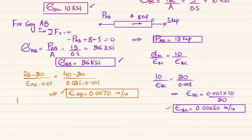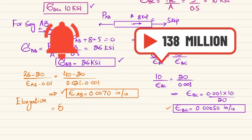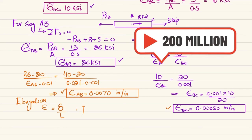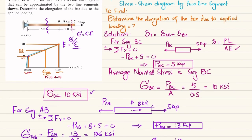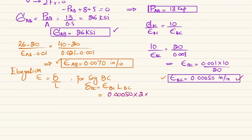Now we move to elongation calculations. Since strain equals change in length divided by original length, the change in length of BC equals strain in BC times length of BC. Strain in BC is 0.0050, and length of BC is 2 feet, which is 24 inches. So the change in length of BC equals 0.0050 times 24, giving 0.120 inch.